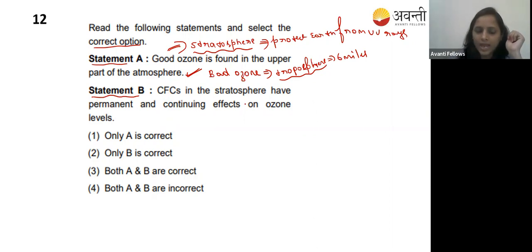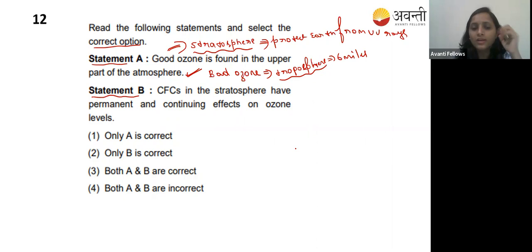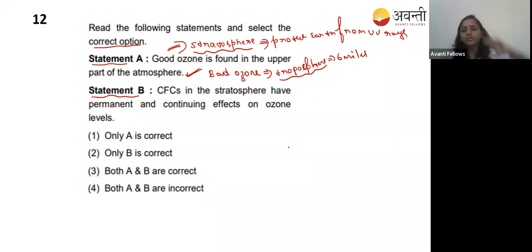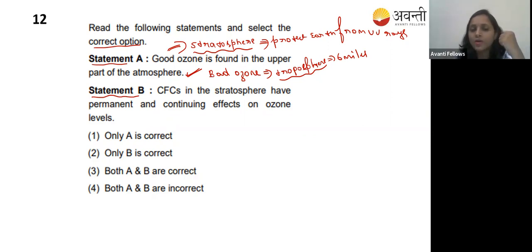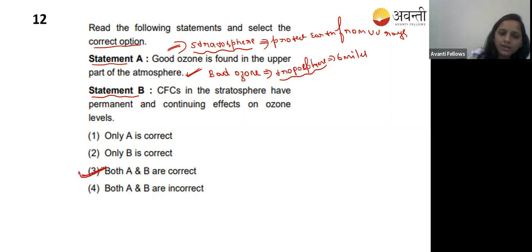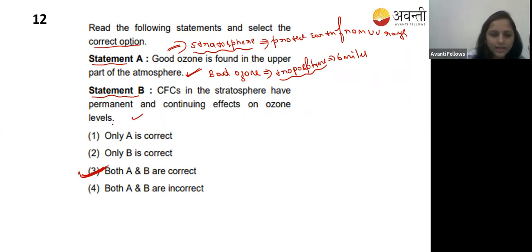Statement two - chlorofluorocarbon in the stratosphere has a permanent and continuing effect on the ozone level. Yes - CFCs from refrigerators and other appliances cause the greenhouse effect and create pores in the ozone layer. Both statements are correct, so both one and two are correct.